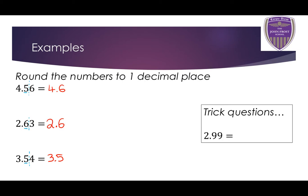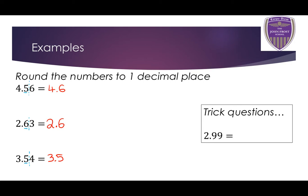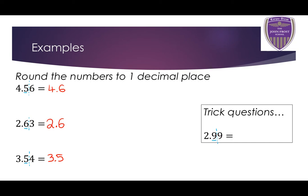Now, there's a trick question on this topic that you will sometimes see — when you try to round a number like 2.99. The first 9 is in the first decimal place, so I draw a line after it. The second number is 9, which is 5 or bigger, so I have to round up the 9 to 10. I can't just write 2.10. The 9 will turn to a 0, and I have to add the 1 from the 10 onto the 2. So 2 plus 1 is 3, meaning 2.99 to one decimal place is 3.0.